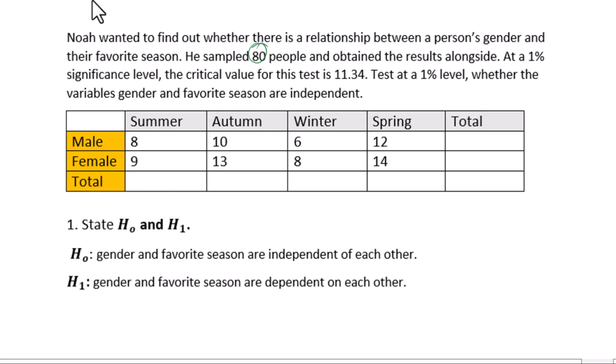First of all, let's state H0 and H1. H0 is the null hypothesis: gender and favorite season are independent of each other. H1 is the alternative hypothesis: gender and favorite season are dependent on each other.